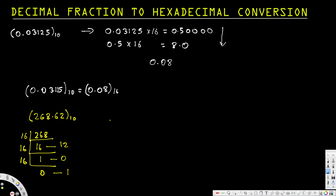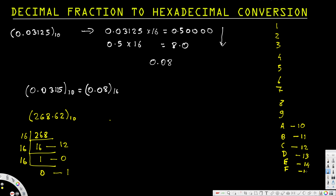When we do the conversion in hexadecimal, we need to know the hexadecimal number system. It goes: 1, 2, 3, 4, 5, 6, 7, 8, 9, and after 9 we have A, B, C, D, E, F. A is 10, B is 11, C is 12, D is 13, E is 14, and F is 15.